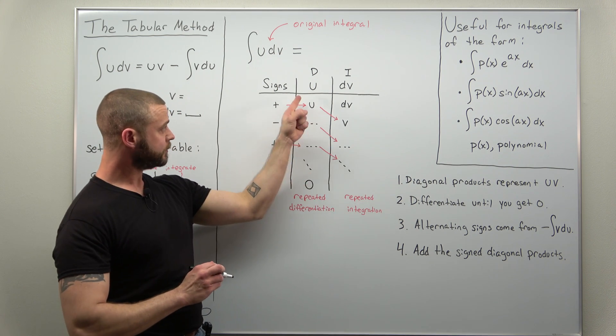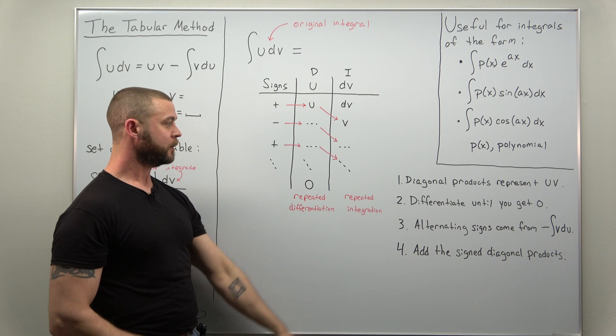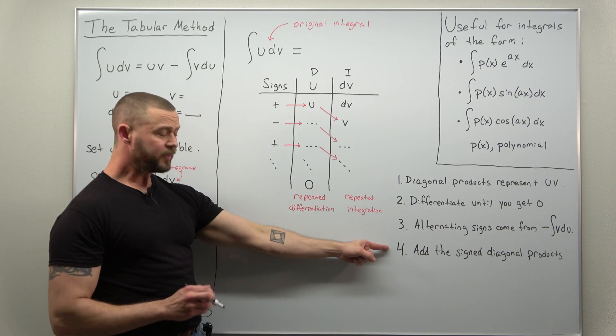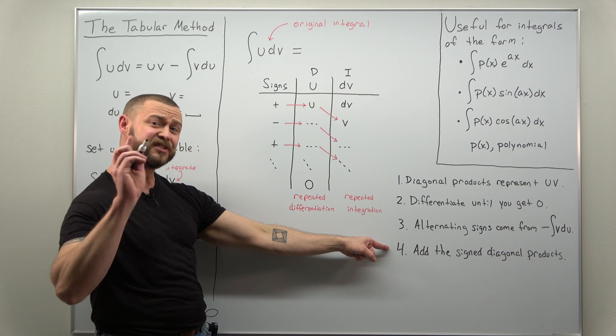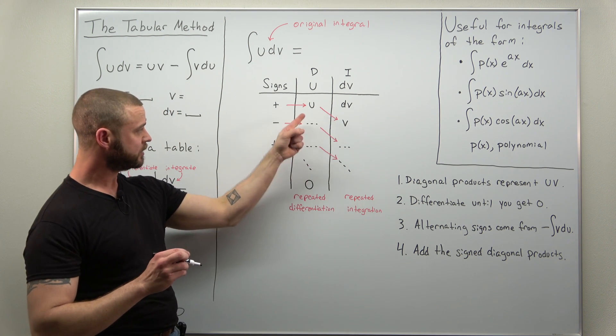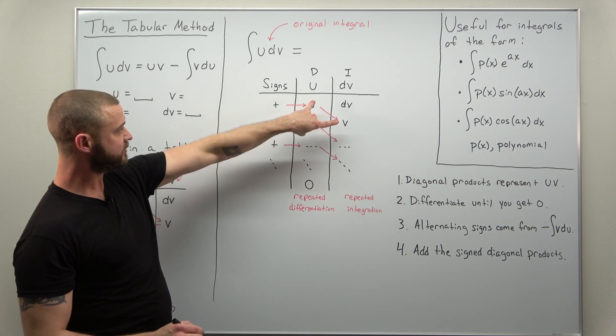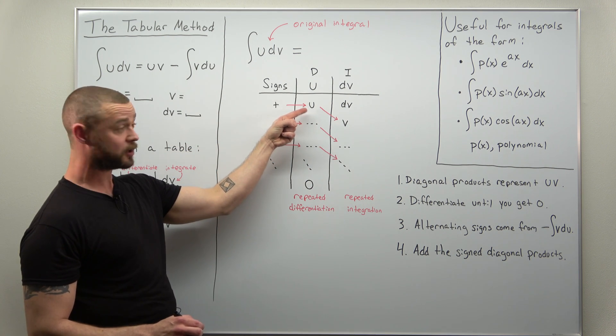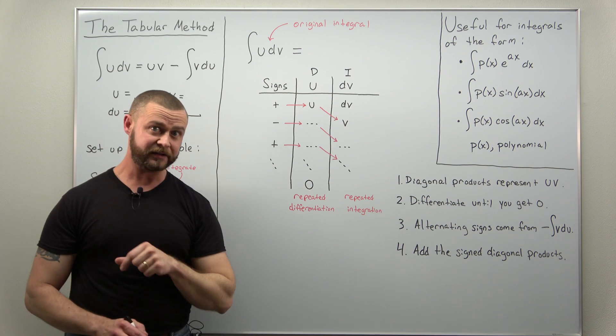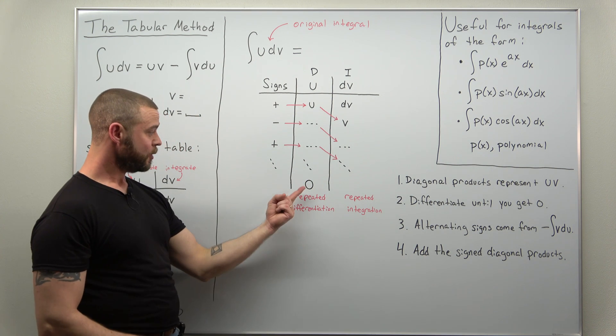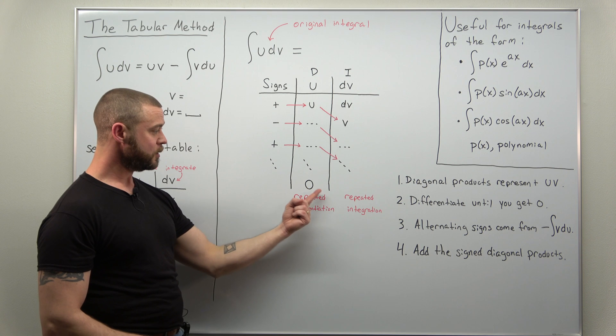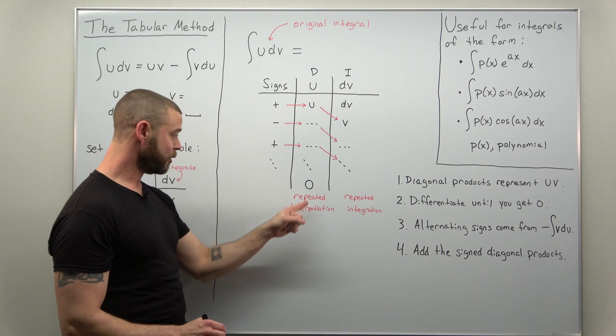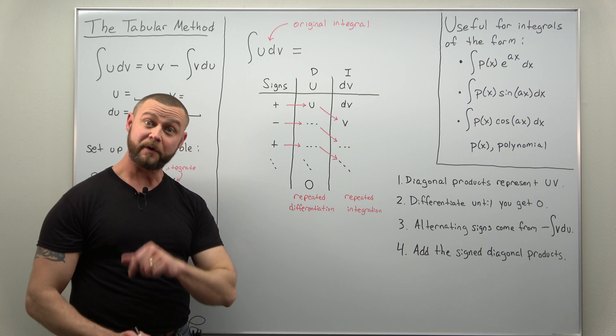How you extract your answer for your original integral, the integral of udv: your diagonal products are your uv terms, and the important part is we're going to basically add the signed diagonal products all the way down. Just keep adding all your signed diagonal products, taking your sign, multiplying it across, and then multiplying diagonally.